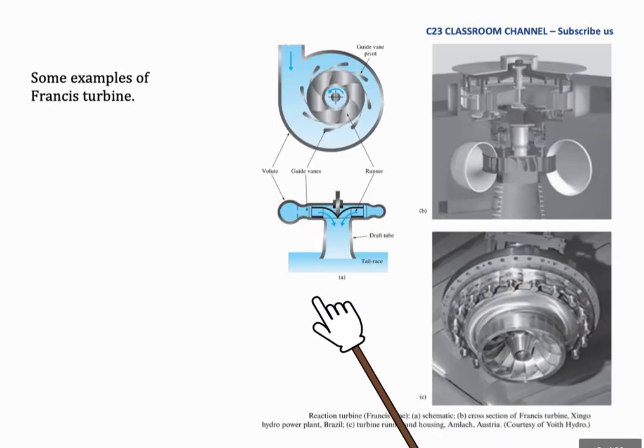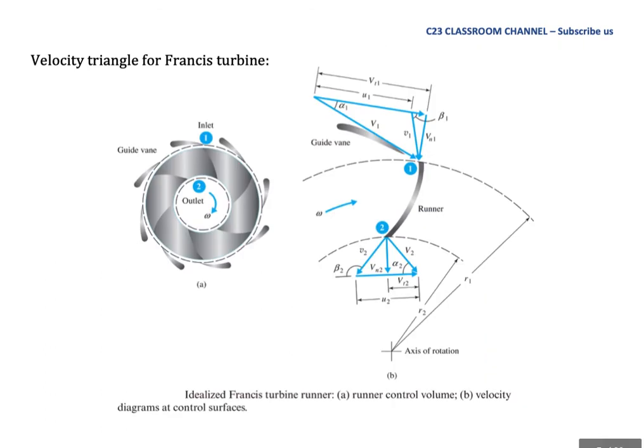This is some examples of Francis Turbine. You may find many examples of Francis Turbine in textbooks and also from the internet. This is the velocity of Francis Turbine. We will learn about velocity triangles in the next chapter.